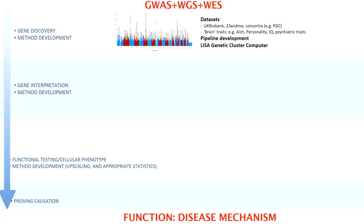We usually start with a dataset, and we collaborate with 23andMe and UK Biobank. We're also involved in many large-scale consortia where we obtain data from and also contribute data we've collected ourselves. I'm also providing a cluster computer to the whole genetic research community, which I made available free of charge to everyone working in genetics, because I think that's a basic requirement for people working in genetics.